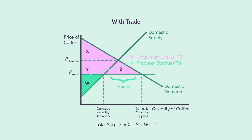The consumer surplus grows to X plus Y plus Z. The producer surplus shrinks to W, and total surplus equals X plus Y plus W plus Z. Comparing the trade outcome with the no-trade outcome, the producers are now worse off since producer surplus decreases by Y. However, domestic consumers are now better off as they pay a lower price of P world for coffee. Thus, the consumer surplus increases by the area Y plus Z due to trade. Since the gains to the consumer outweigh the losses to the producers, trade increases the total welfare, which increases by Z. The quantity of imports is the difference between the domestic quantity demanded and the domestic quantity supplied at the world price of P world. Knowing the determinants of trade is vital in predicting or analyzing welfare outcomes.